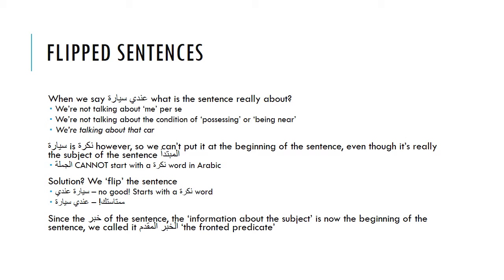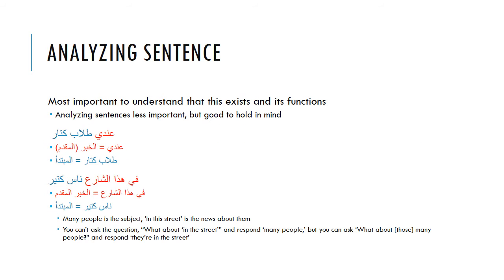Since the خَبَر of the sentence — the information about the subject — is now at the beginning of the sentence, we call it الخَبَر المُقَدَّم, which is the خَبَر that is put at the front: the fronted predicate. It's useful to remember these sentences are different from normal جملة اسمية. For example: عَندي طلاب كتار — عَند is the خَبَر and طلاب كتار is the مبتدأ. Another example: في هذا الشارع ناس كتير — في هذا الشارع is the خَبَر المُقَدَّم and ناس كتير is the مبتدأ.